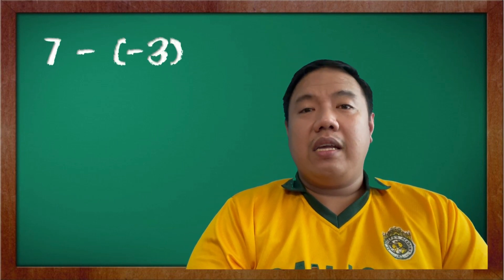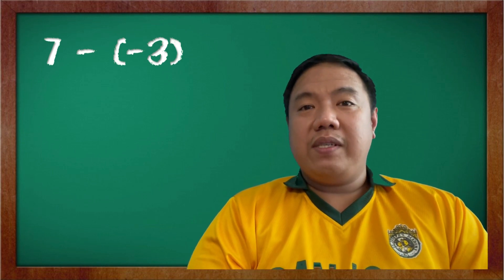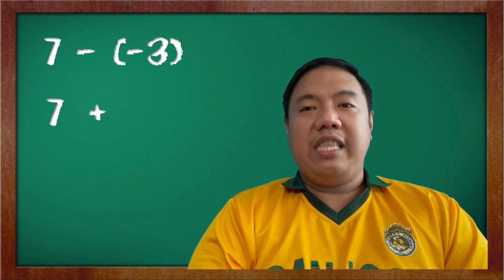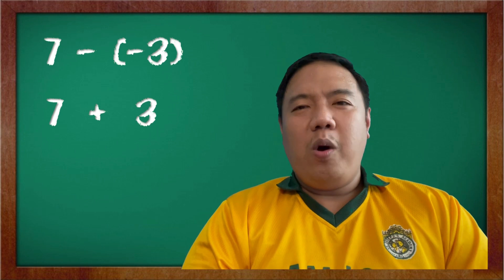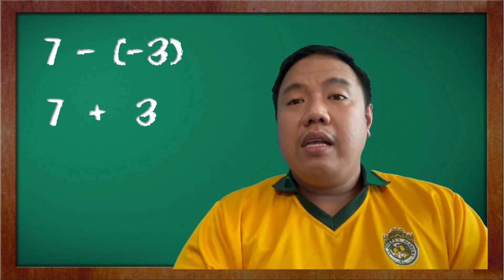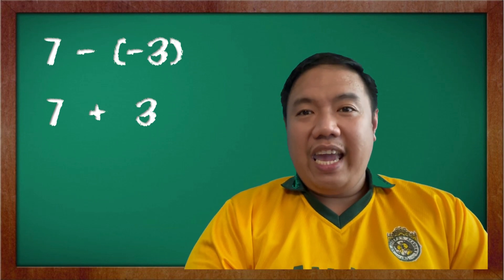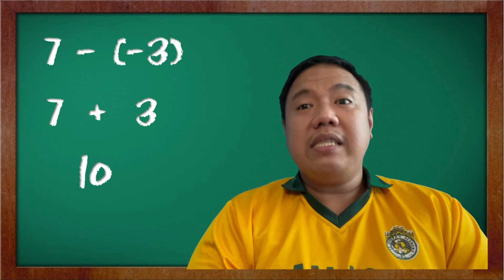Another one. What if I have 7 minus negative 3? Again, we need to copy the first term. Minus will be plus. The opposite of negative 3 will be positive 3. Therefore, we'll have the addition of like signs: 7 plus 3 is 10. The common sign is positive. So our final answer is positive 10, or simply 10.